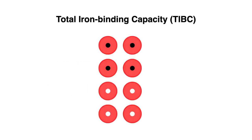We have another parameter known as TIBC or total iron binding capacity, and this one can be a little confusing, so let's go through this diagram for a better understanding. In this diagram we have eight transferrin molecules, four of which are bound to serum iron and four of which still have open binding sites.